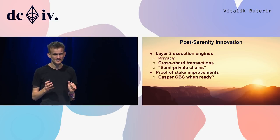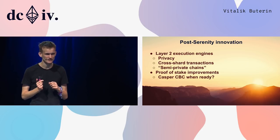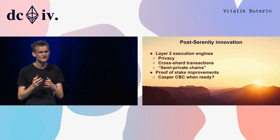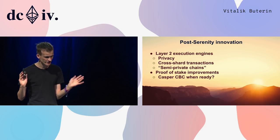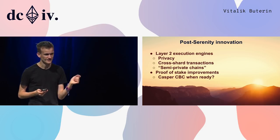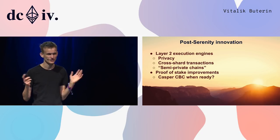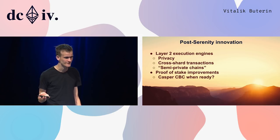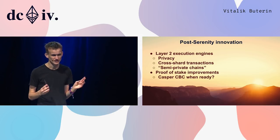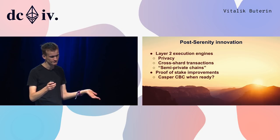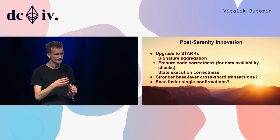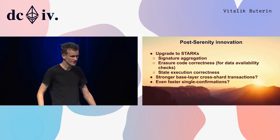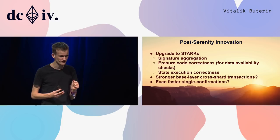Post-Serenity innovations: semi-private chains — if you want to build an application where data is kept private between a few users, you can dump the data on the public chain in encrypted form, or dump hashes and use zero-knowledge proofs. Proof of stake improvements with Casper CBC are definitely on the roadmap. We also have a door open to upgrading everything to STARKs — using STARKs for signature aggregation, verifying erasure codes, and data availability checks.